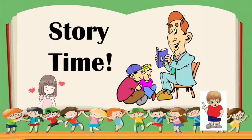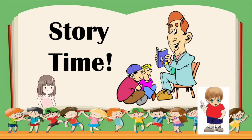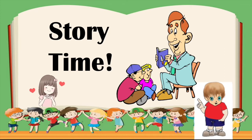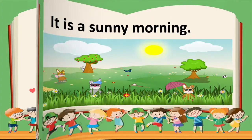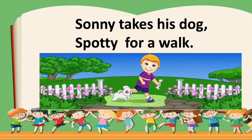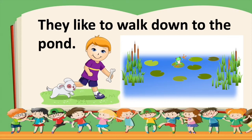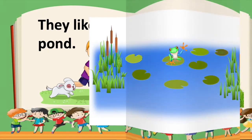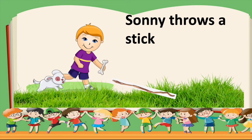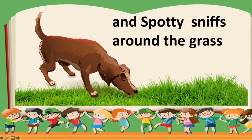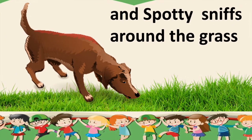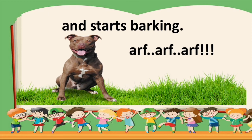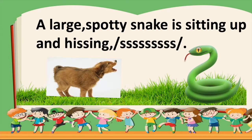Kids, before we start our lesson, let's have a short story. Are you ready? It is a sunny morning. The name of the boy is Sunny. Sunny takes his dog, Spotty, for a walk. They like to walk down to the pond. And Spotty sniffs around the grass and starts barking. A large spotty snake is sitting up and hissing ssss.